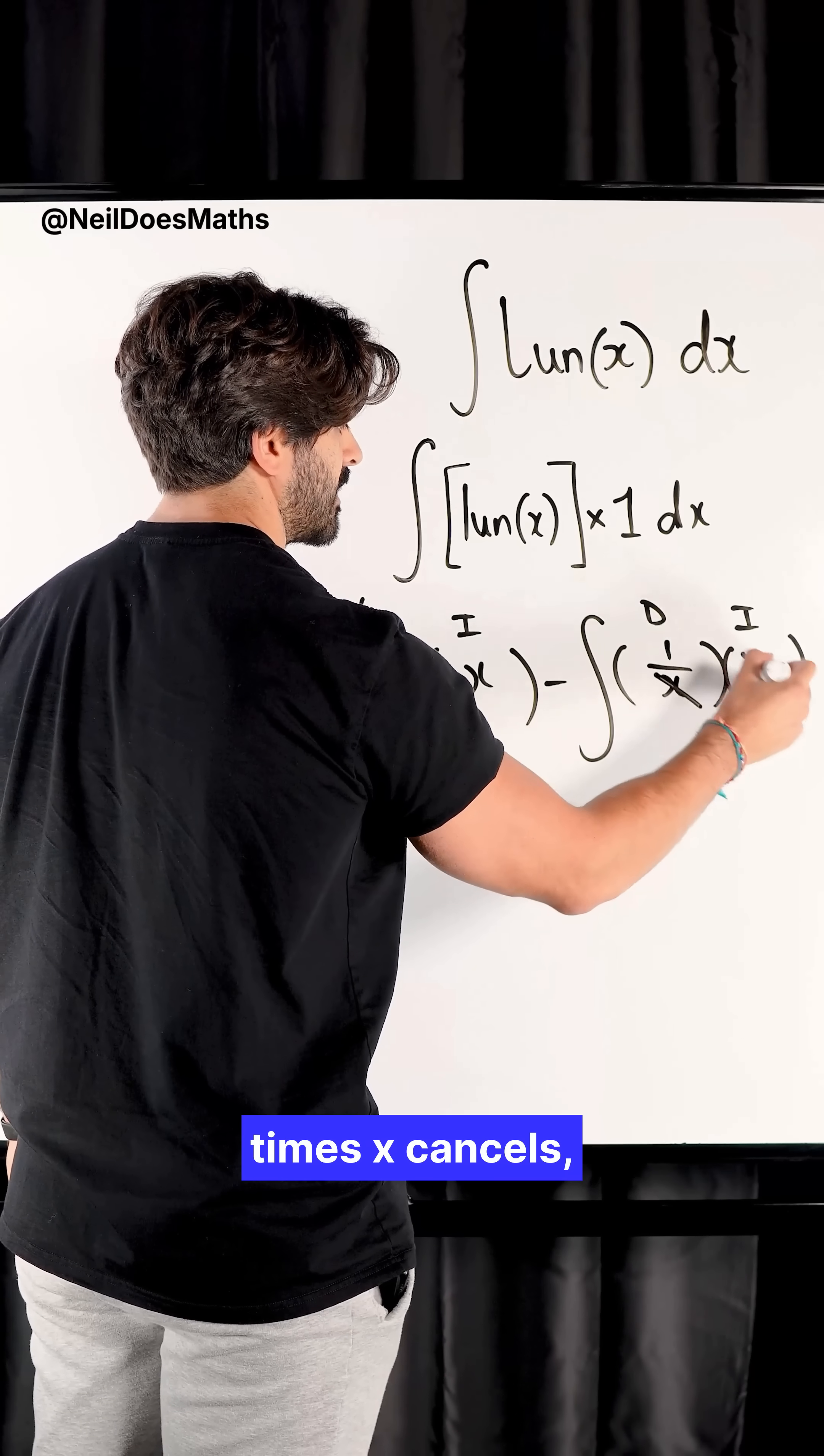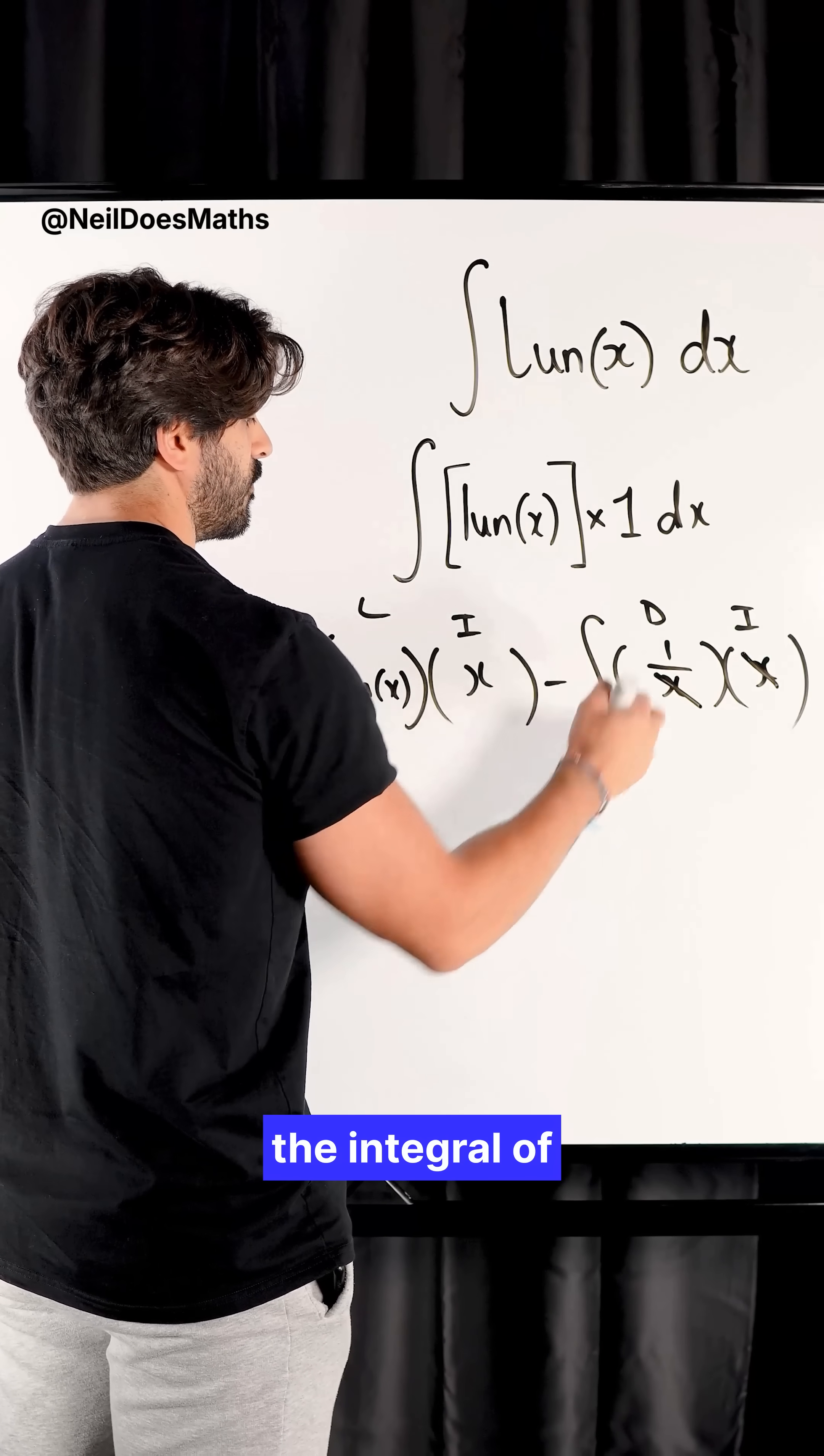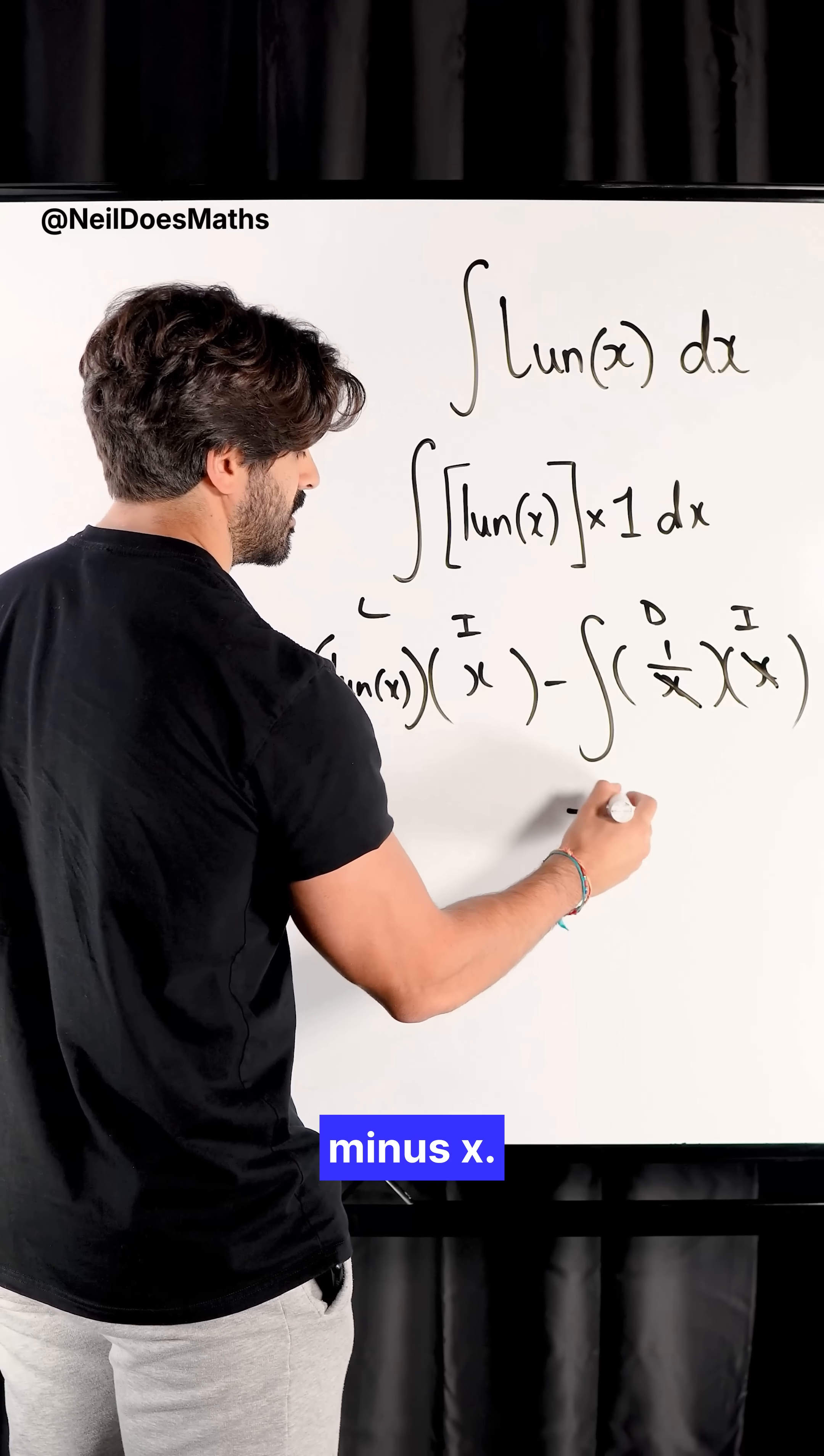One over X times X cancels. We're just left with the integral of one, which is just X. So we get minus X.